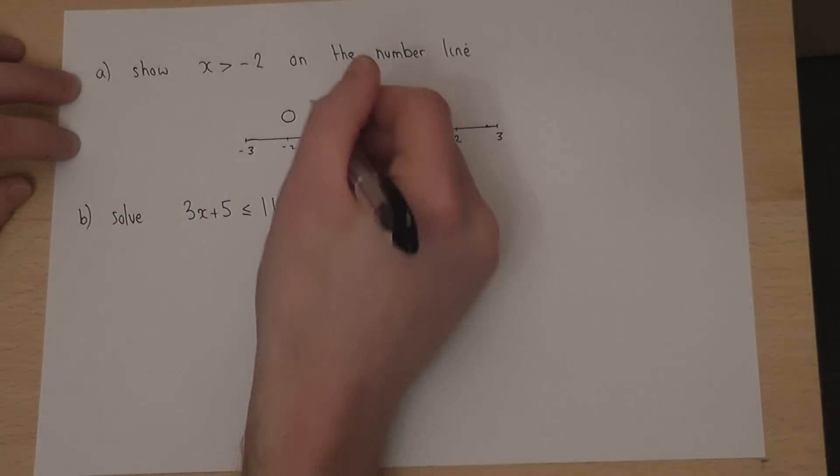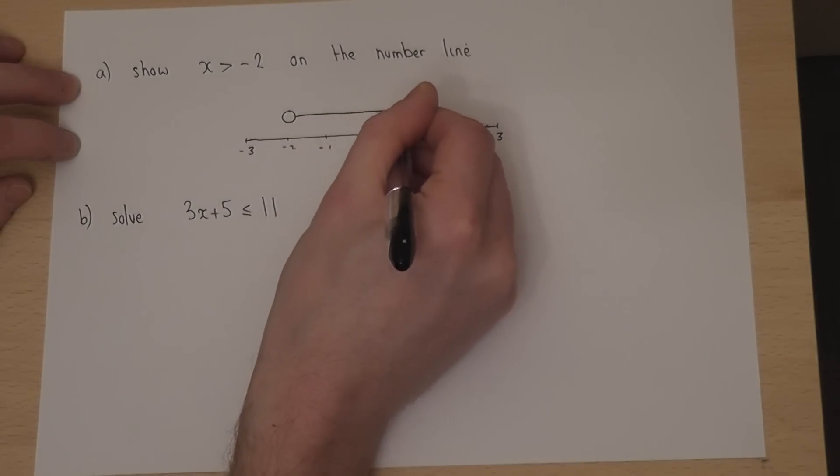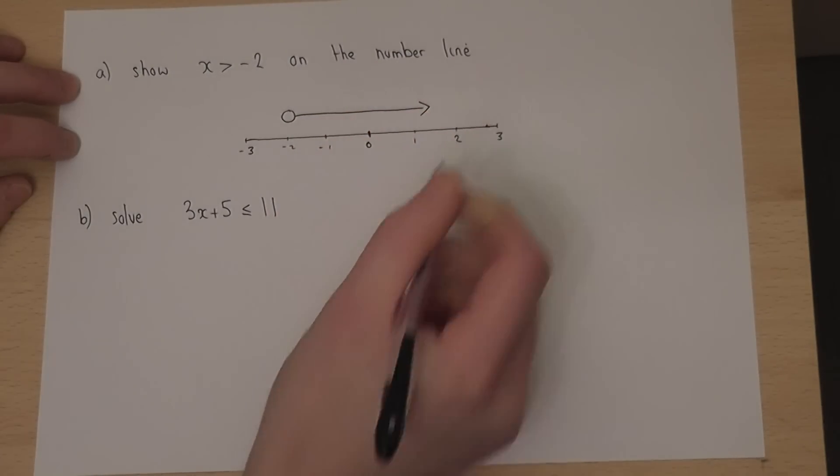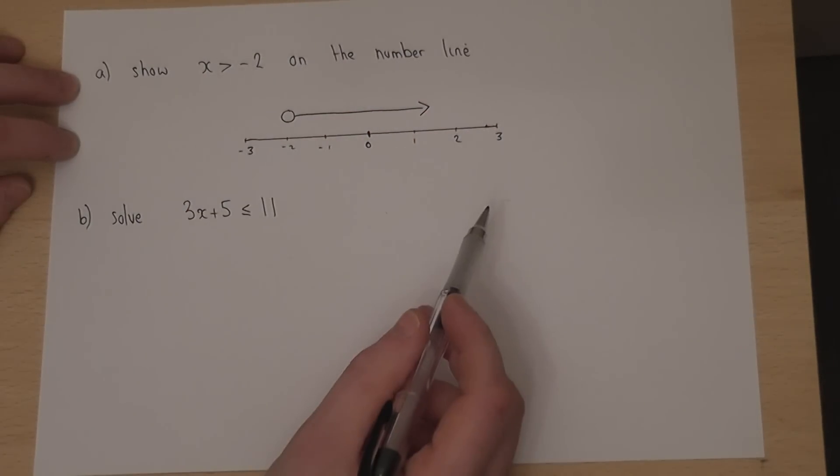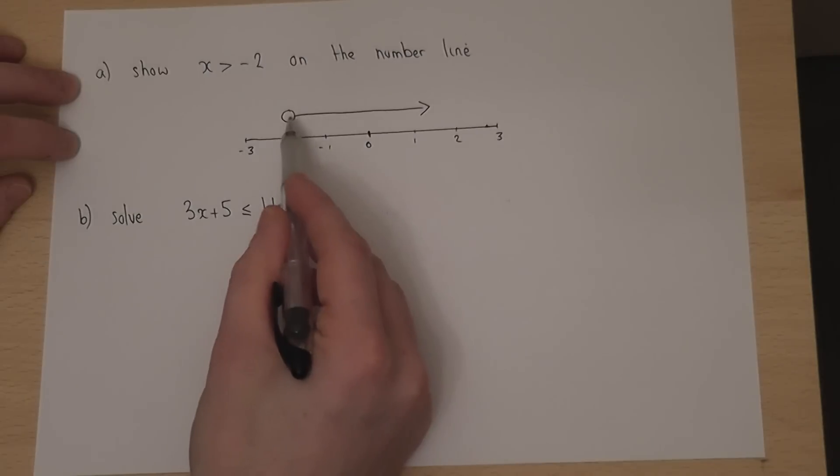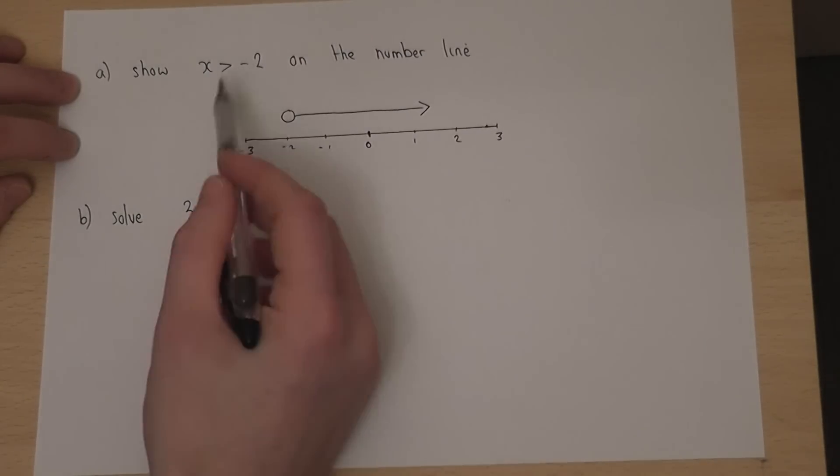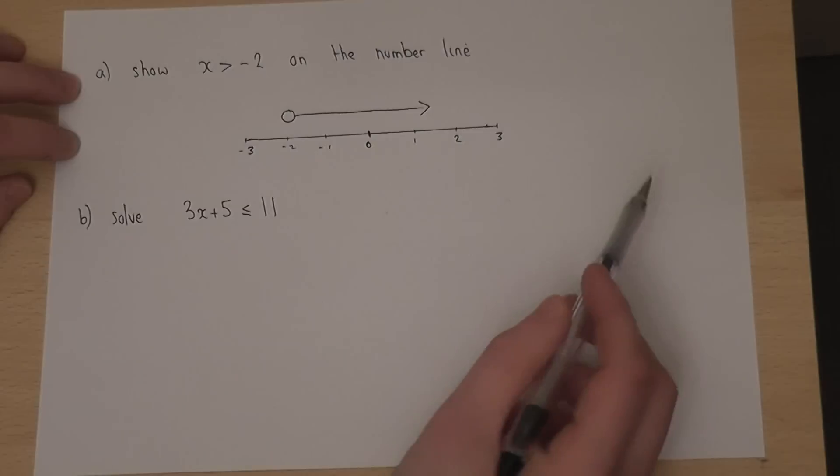I then draw a line to the right to denote that x must be bigger than minus 2. So, this number line represents the inequality x bigger than minus 2.